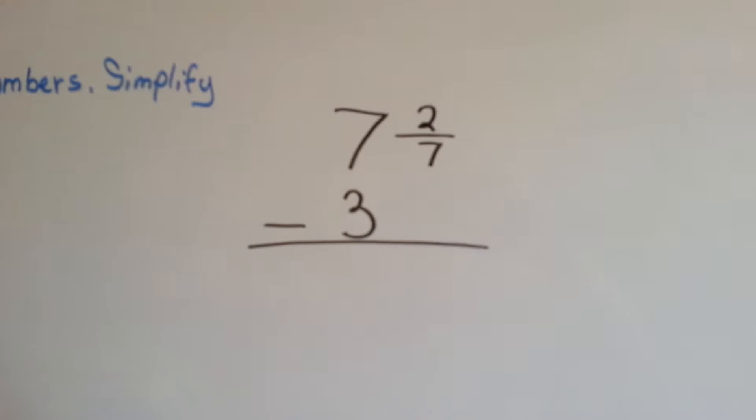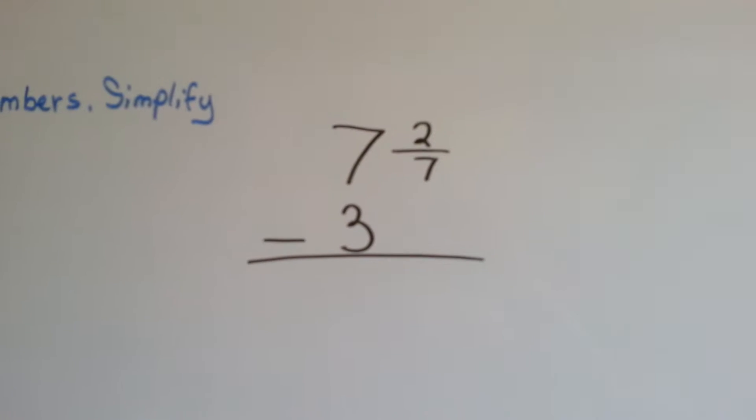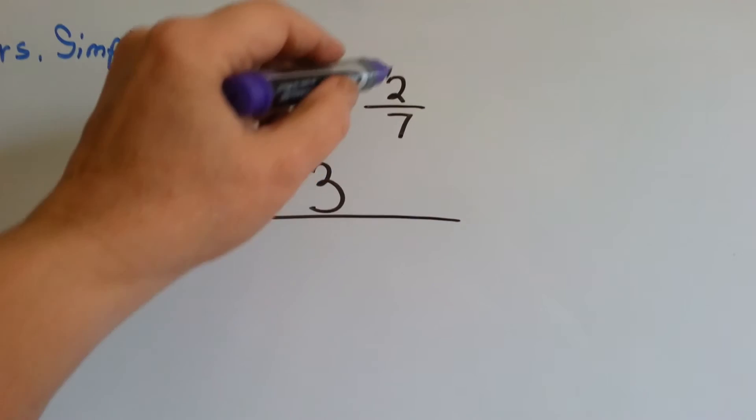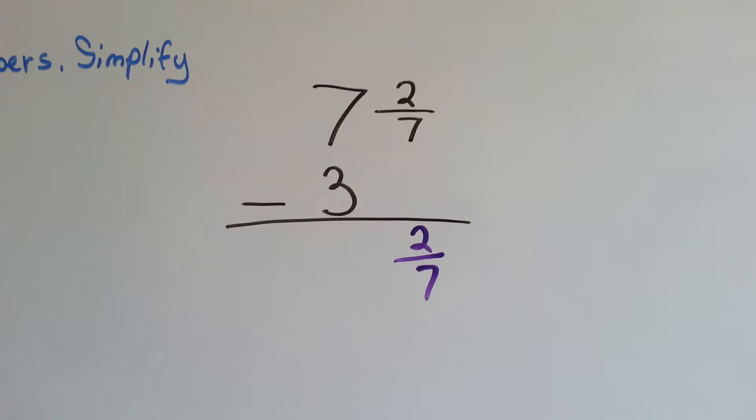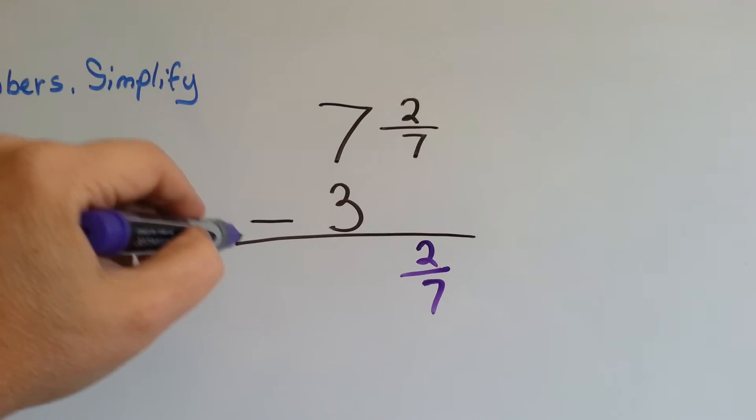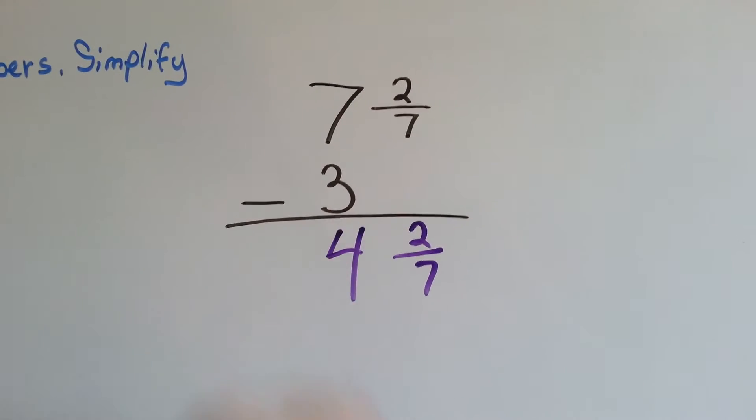What do you do when there's no fraction in the second one? You just drop down the fraction. That's it. And then you do the whole numbers. 7 minus 3 is 4. Wasn't that simple?